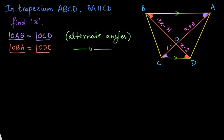Basically, you can see that in these two triangles — triangle OAB and triangle OCD — two pairs of angles are equal, which means the third pair will also be equal because of the angle sum property. Because of that, I can say that triangle OAB and triangle OCD are similar triangles using the angle-angle criteria.